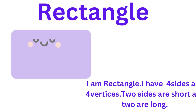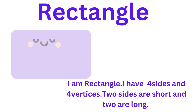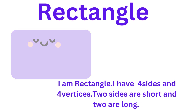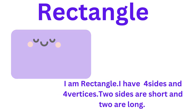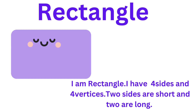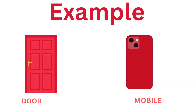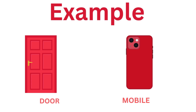Red rectangle. I am rectangle. I have four sides and four vertex. Two sides are short and two are long. Example: door or mobile phone.